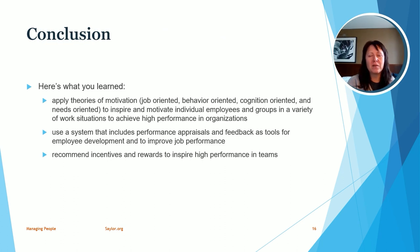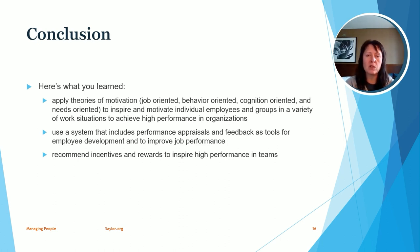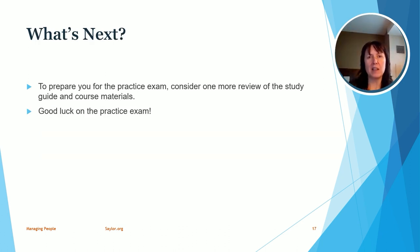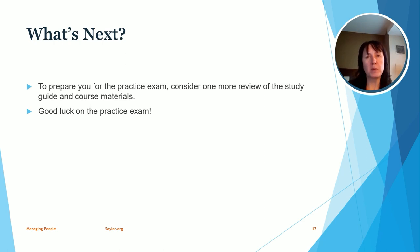This concludes our video review on Unit 2. We tied back what you've learned to the learning objectives, which include applying theories of motivation — job oriented, behavior oriented, cognition oriented, and needs oriented theories. We also talked about a system that includes performance appraisals and feedback as great tools for employee development. And we addressed how we can recommend incentives and rewards to get the best performance from our team. I recommend that you do another review of the material, especially areas you had challenges with. Once you review that material, you should be all set to take the practice exam — best of luck!